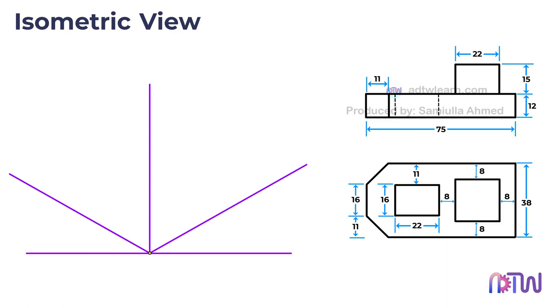The line passing through the 30-degree mark will be the x-axis, the line passing through the 90-degree mark will be the y-axis, and the remaining line will be the z-axis. With these three isometric axes in place, we can now construct the isometric view of the object.